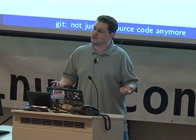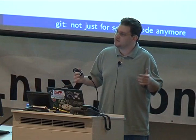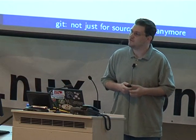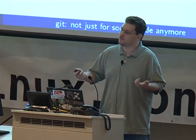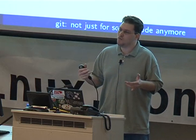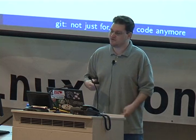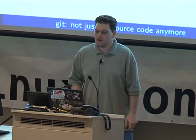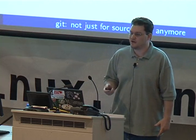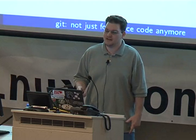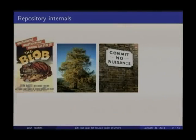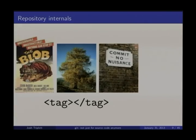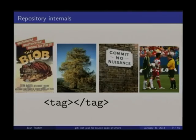Repository internals for Git, at the 10,000-foot view, are very simple. There are four types of objects stored in the repository and one type of metadata that references those objects. The four types are blobs, trees, commits, and tags. The one other thing you'll deal with a lot programmatically is refs, which point to commits or tags.